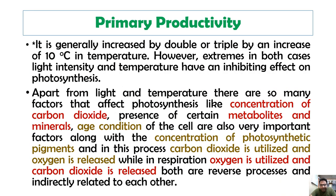The capture of solar energy by green aquatic organisms and conversion of a portion of this solar energy into chemical energy through carbon assimilation or photosynthesis is how primary productivity takes place. Primary production is the amount of organic matter produced, while primary productivity is the rate of production.